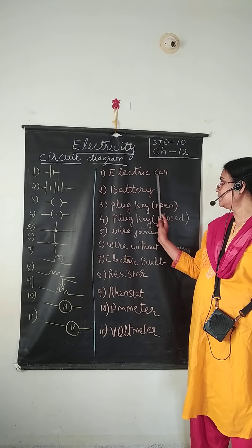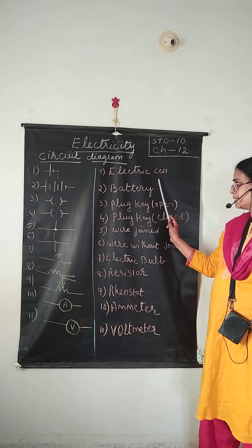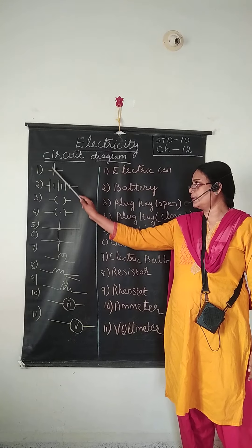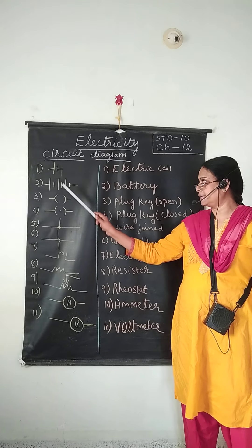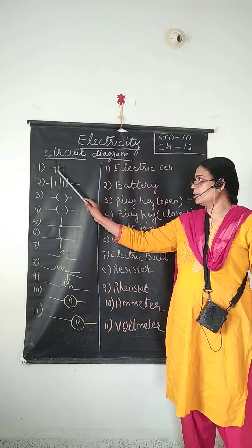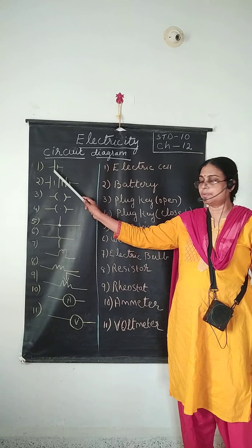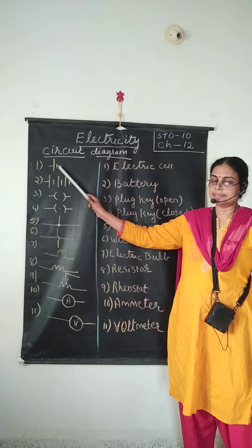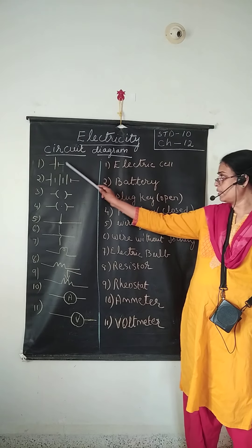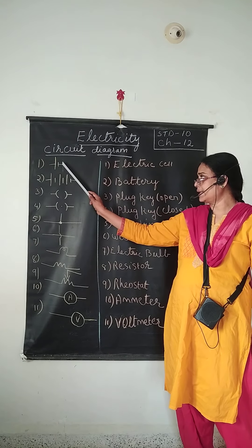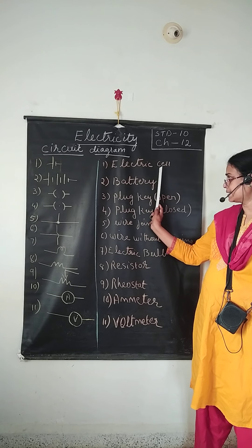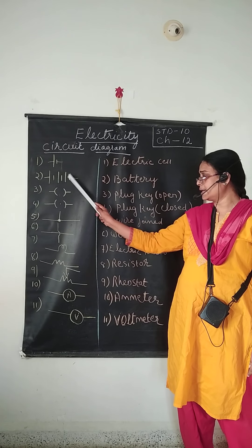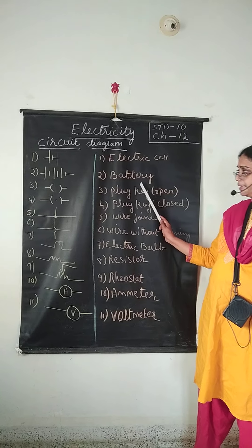Now you can see the electric cell. The symbol for an electric cell is one long line and a short line. The long line stands for the positive pole of the battery and the short line is negative. This is called one single cell. If many cells are there, that is called a battery.